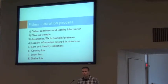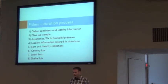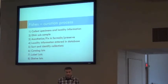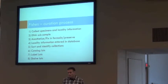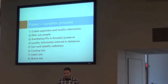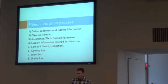We'll go through fishes in a little bit of detail. It's a seven-step process: collect specimens and locality information, take DNA subsamples for those specimens, anesthetize and fix the specimens in formalin and preserve them long-term in alcohol, put the locality information in the database, sort and identify collections, catalog lots, label lots, and shelve lots.